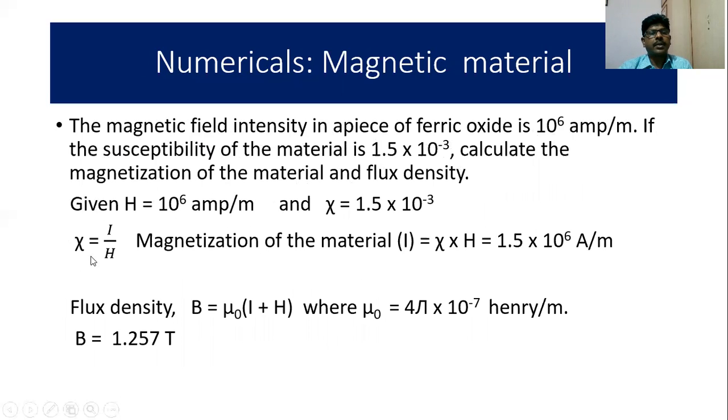From the relation χ = I/H, magnetization of the material equals susceptibility times H, which equals 1.5 × 10⁶ A/m. Also, flux density B = μ₀(I + H), where μ₀ = 4π × 10⁻⁷ henry/m. On substituting, we get B = 1.257 tesla.